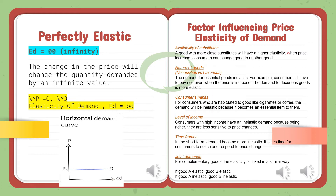Joint demand is also a factor. For complementary goods, the elasticity is linked in a similar way. For example, if the demand for bread is elastic, the demand for jam will also become elastic, and vice versa.